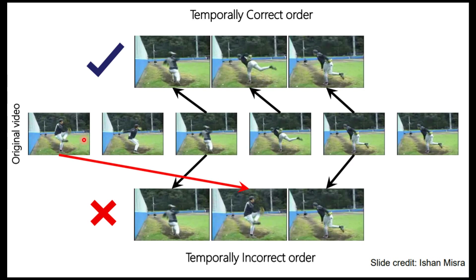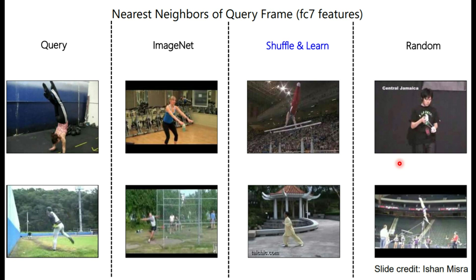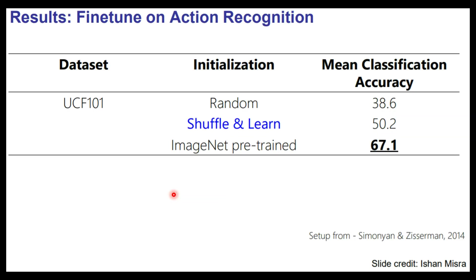For example, this is a video of a player throwing a baseball. If you give frames one, two, three in the correct temporal order, this forms a positive sample. If you give frame three, then frame one, then frame five, they are not in the correct order and it forms a negative example. The network predicts whether the tuple is correct or incorrect. The nearest-neighbor generation shows that Shuffle and Learn learns good features compared to ImageNet pre-trained and random initialization, and it performs better on action recognition than a randomly initialized network.